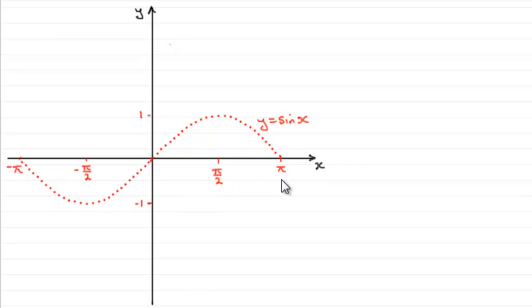If it was in degrees, it would be minus 180 degrees to 180 degrees. The range for sine x is between minus 1 and 1. It's a graph we should be familiar with.